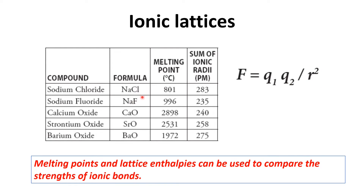The second factor is the distance between the ions. Comparing the first two compounds: the charge is the same but the distance between the ions is different. If the sum of ionic radii — that is, the distance between the ions — is more, the melting point is lesser. This tells us that the force of attraction is inversely proportional to the distance between the ions. Apart from melting point, the force of attraction also affects the lattice enthalpies of the ionic bonds.